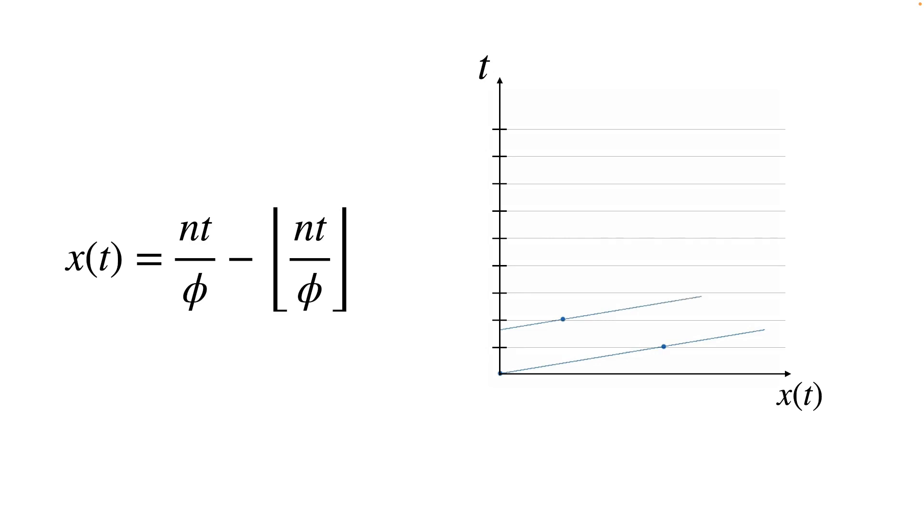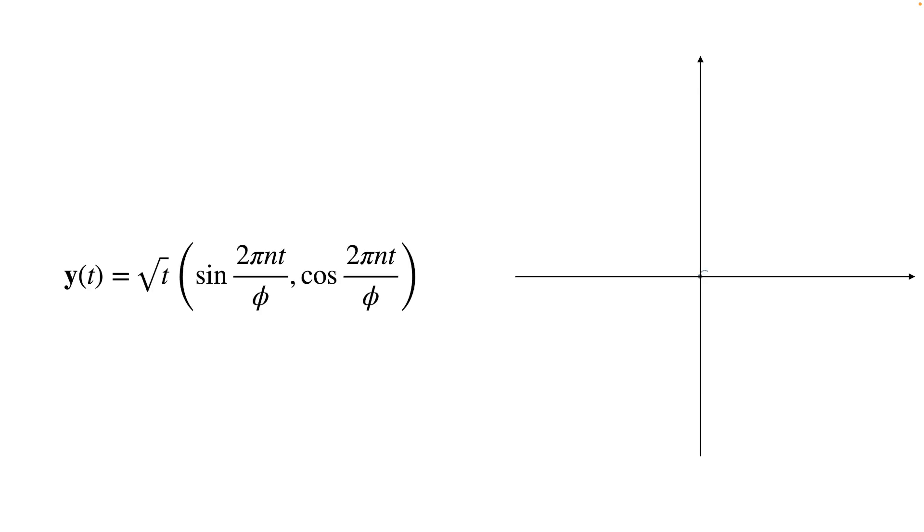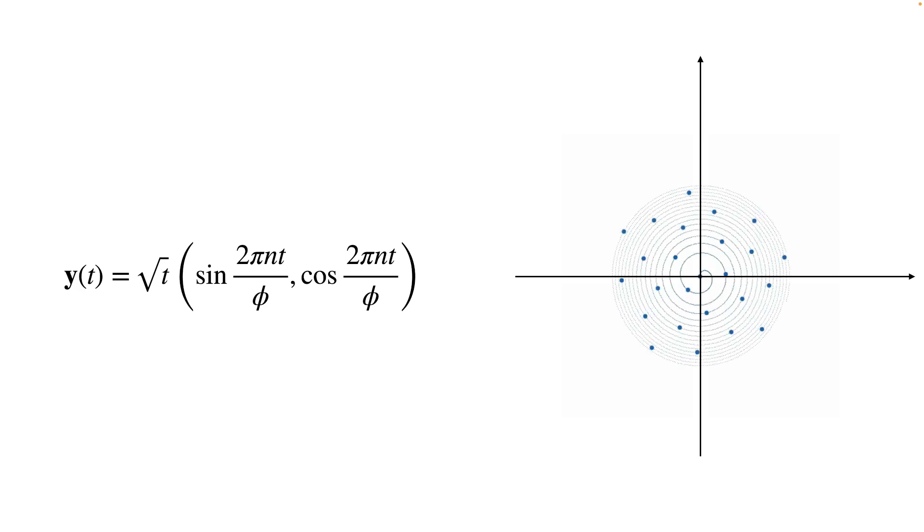This means we consider a simple parametric linear curve and sample it at regular intervals. Now we can map this square to the unit disc. The important point here is the square root. It ensures that infinitesimal areas are preserved. Plugging into Cartesian coordinates yields the Fibonacci spiral. Sampled at regular intervals, it provides the Fibonacci sampling of a disc.